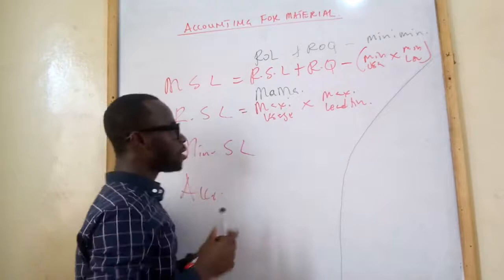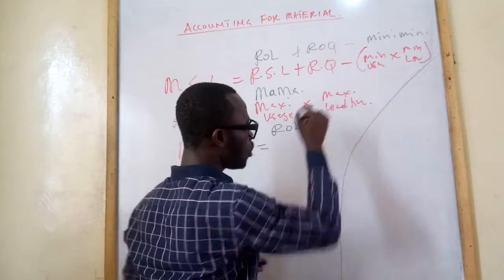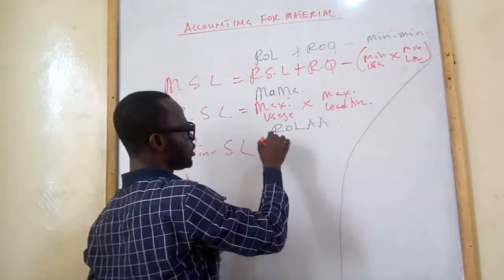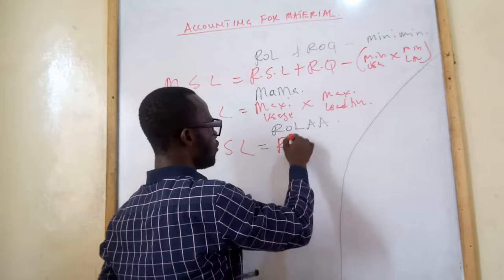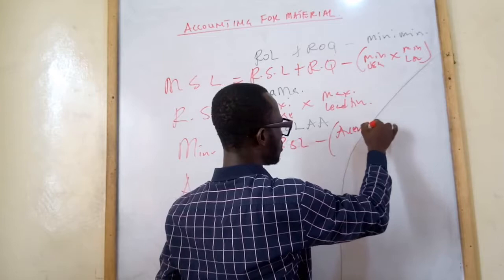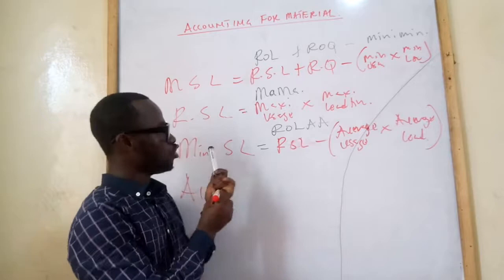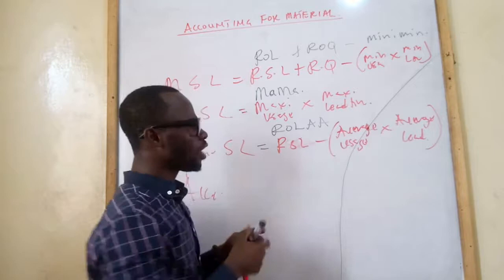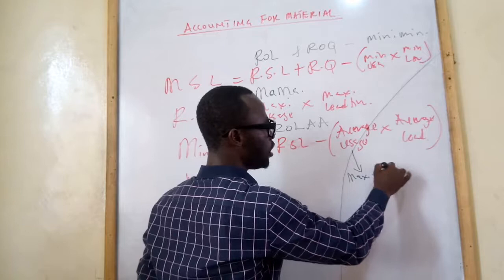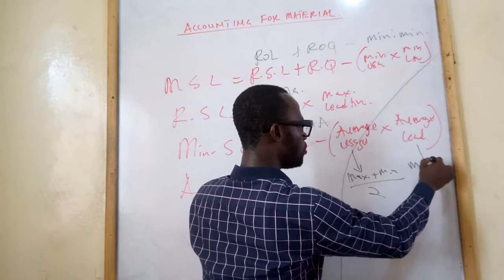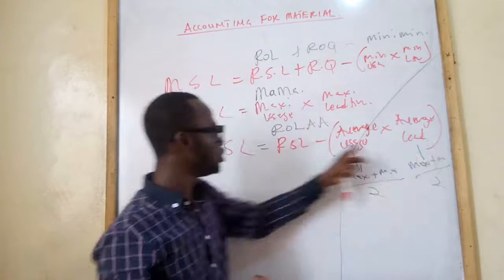Minimum stock level uses the mnemonic 'Roller': reorder stock level minus average usage times average lead time (or average delivery time). Average usage is maximum usage plus minimum usage divided by 2. Average lead time is maximum lead time plus minimum lead time divided by 2.